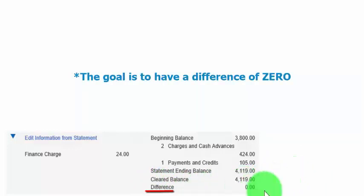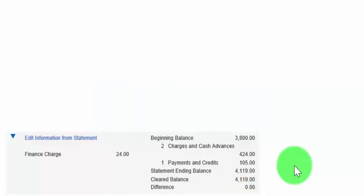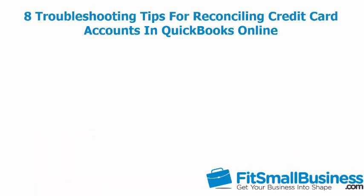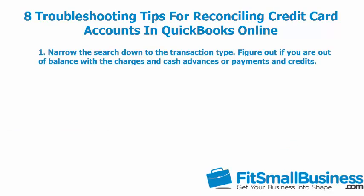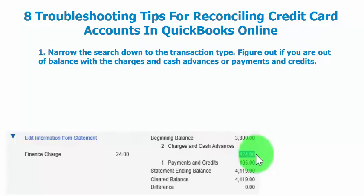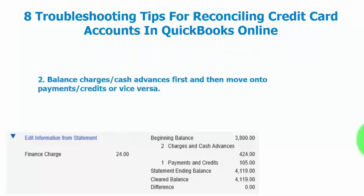Our ultimate goal is to have a difference of zero. If your difference is not zero, try some troubleshooting steps. Tip one: narrow the search down to the transaction type. Figure out if you are out of balance with charges and cash advances or payments and credits. Tip two: if you happen to be out of balance for both charges and cash advances and payments and credits, then tackle them separately — balance your charges and cash advances first, then move on to payments and credits, or vice versa.